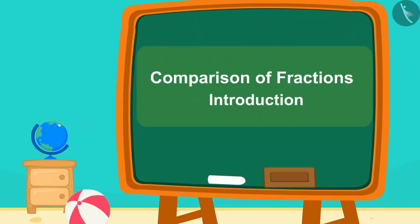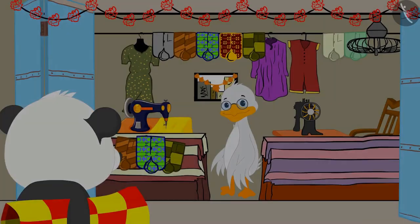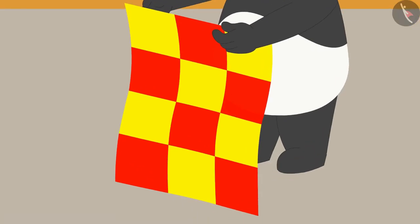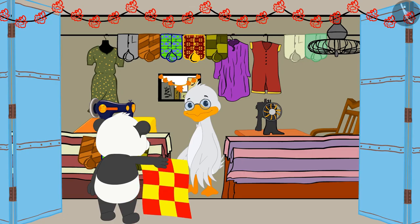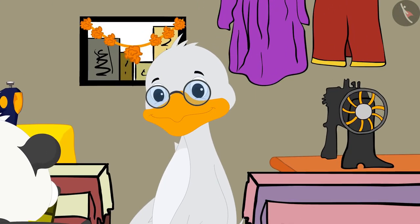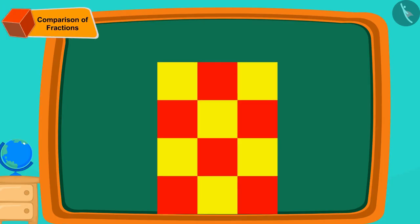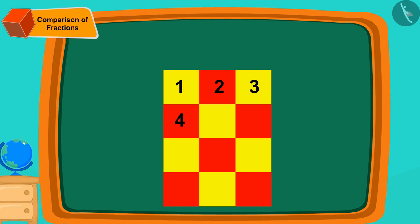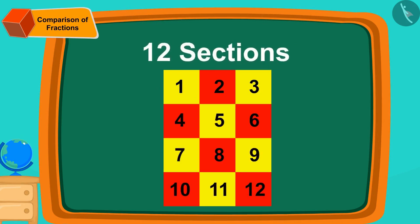Hello children. In this video we will learn to identify and compare fractions. Golu has got a cloth of this design to Chacha's shop today — he wants to get a trouser stitched for himself. Children, can you tell how many sections are there in the design of Golu's cloth? Yes, 12 sections.